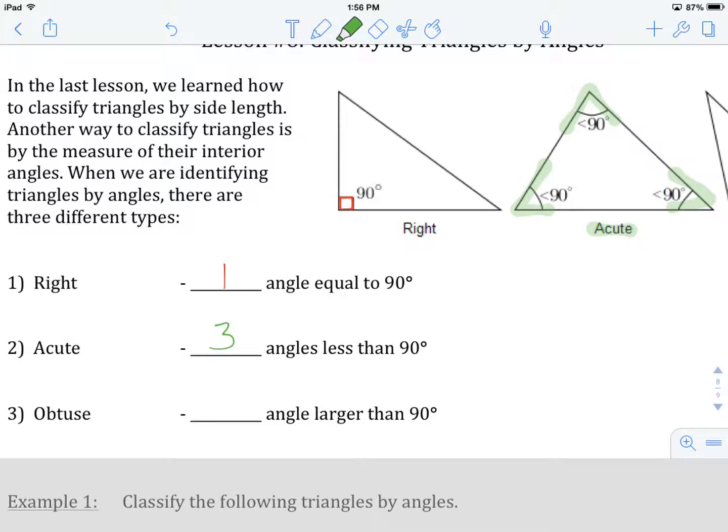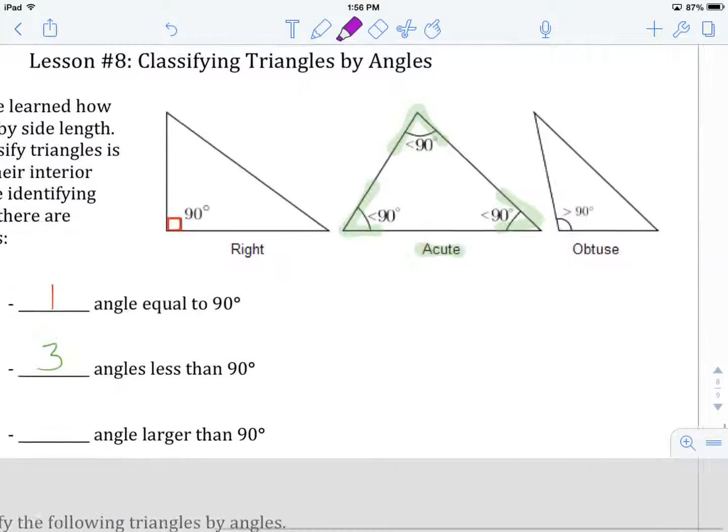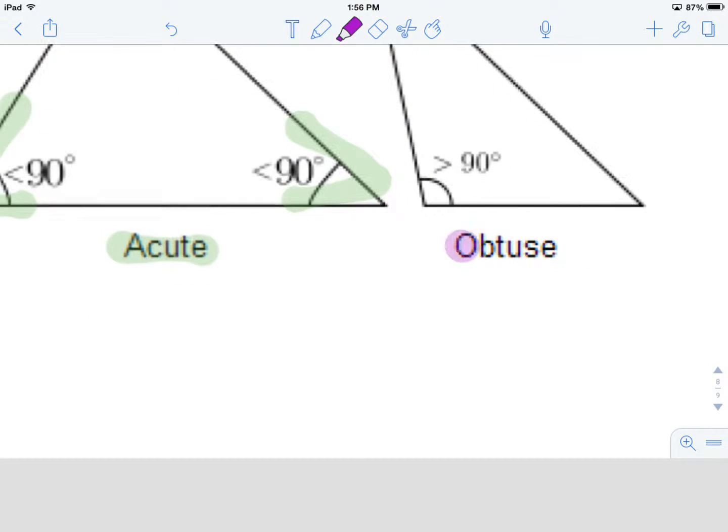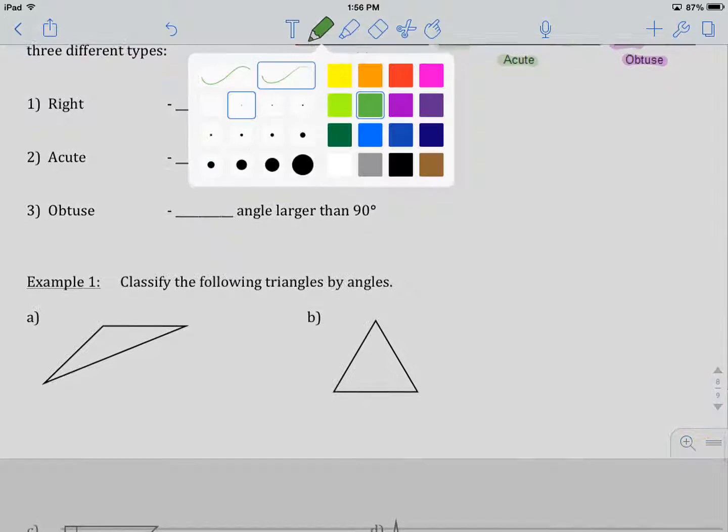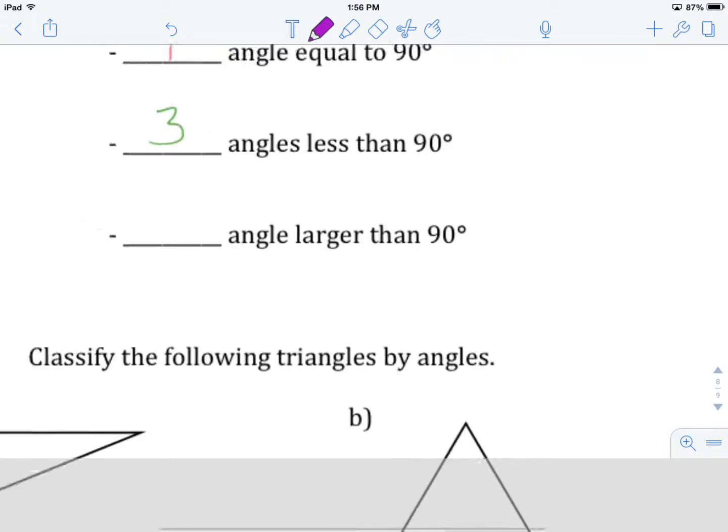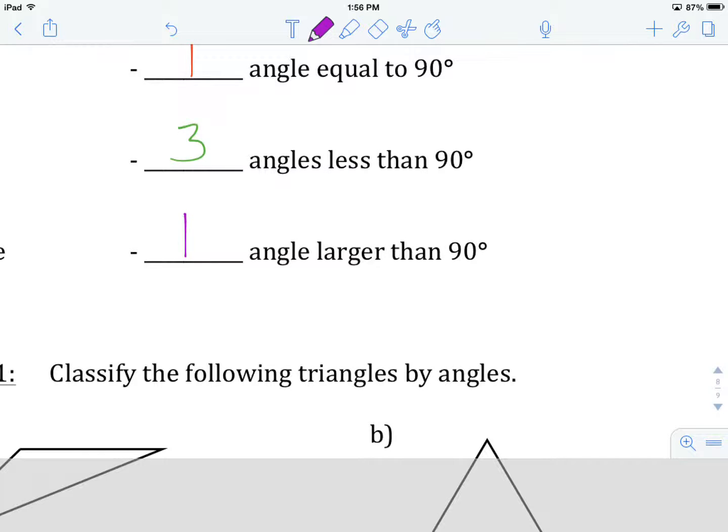The last type of triangle we're going to look at is called an obtuse triangle. An obtuse triangle needs to have one angle that's larger than 90 degrees. Only needs one.